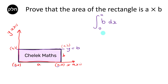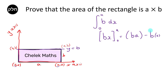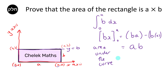Let's do this integration. Integrating B in terms of x just gives me Bx, and my limits are between A and 0. So that's going to give me B times A, because when I place A in I get B times A, minus B times 0. Which just gives me AB. Therefore, the area under the curve is AB, and so the area of that rectangle is just A times B, or base times height.